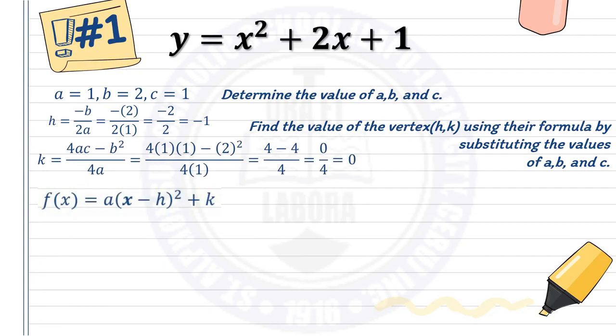Next, find k using k equals 4ac minus b squared over 4a. Substituting the values: 4 times 1 times 1 minus 2 squared over 4 times 1. Simplifying: 4 minus 4 over 4, which gives 0 over 4. So k is 0.